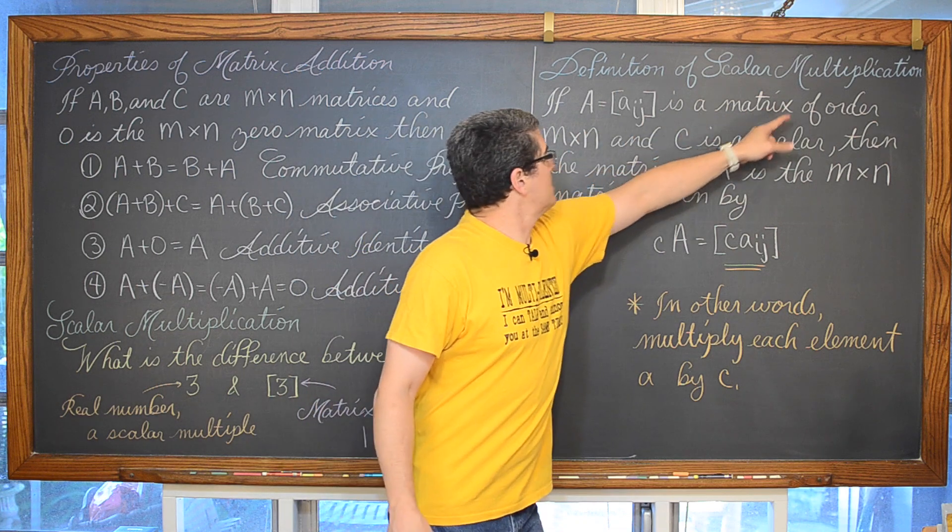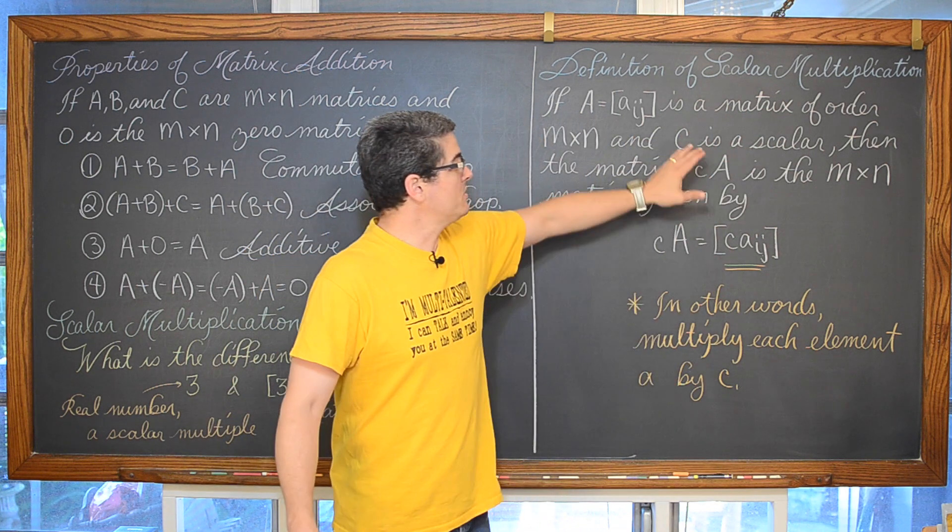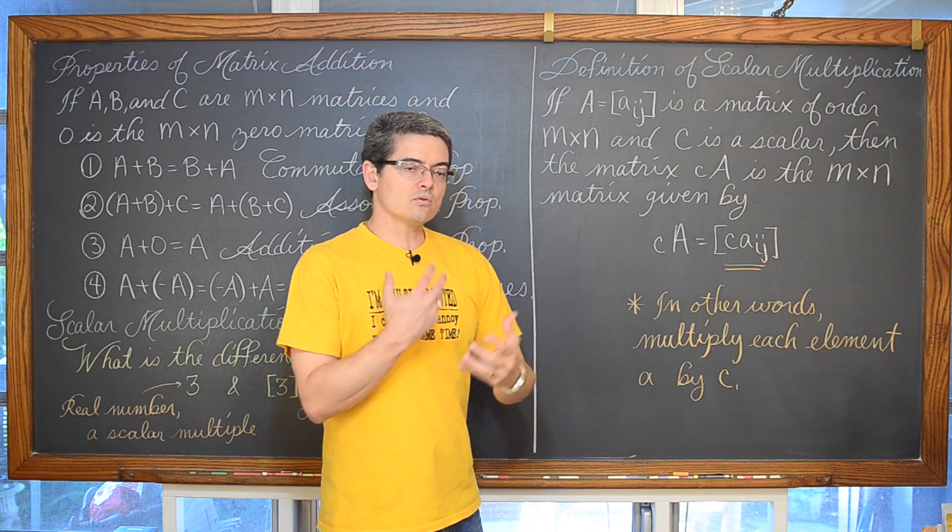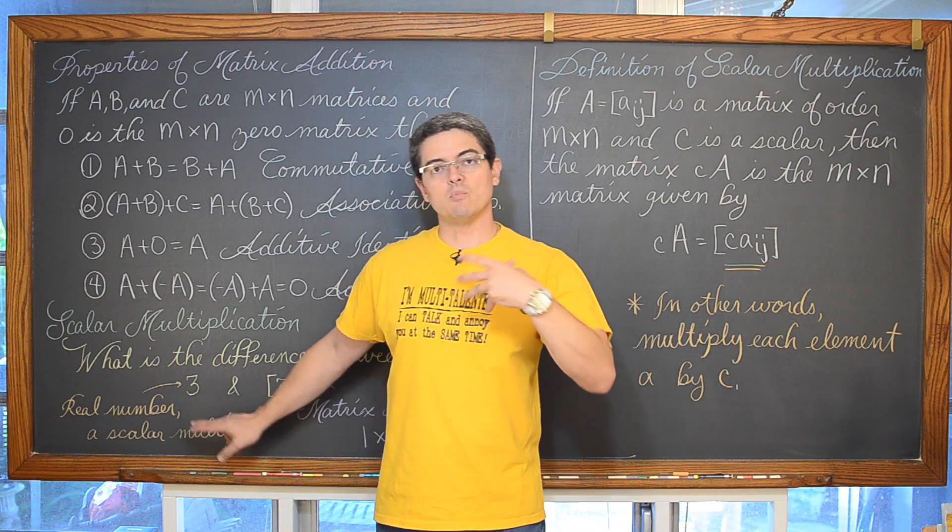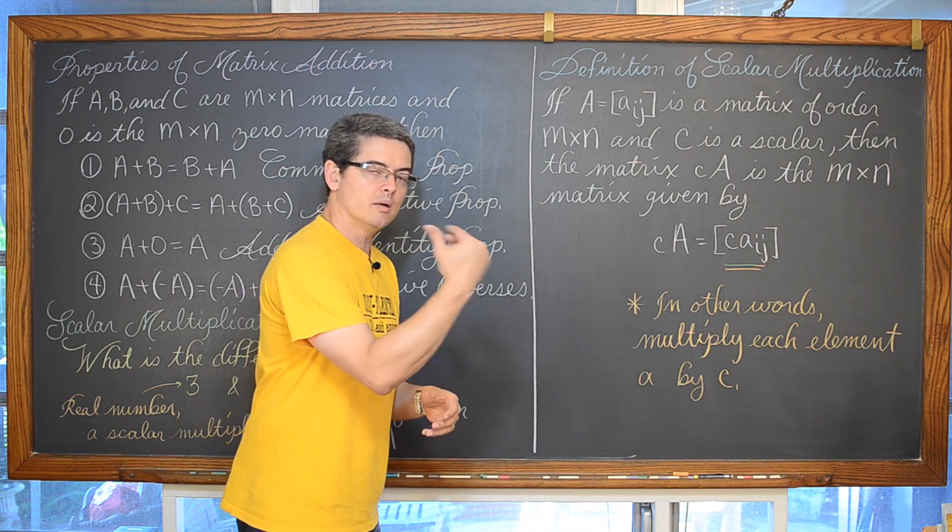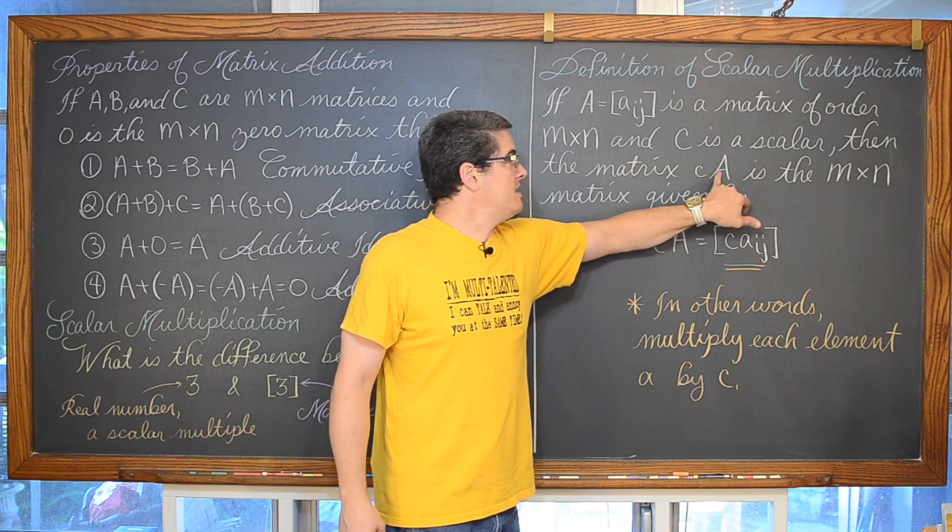So if A is a matrix of order m by n and C is a scalar, there is no notation of C being a certain order or size matrix because that is just going to be a real number that gets multiplied through and applied to each of the elements in our matrix.